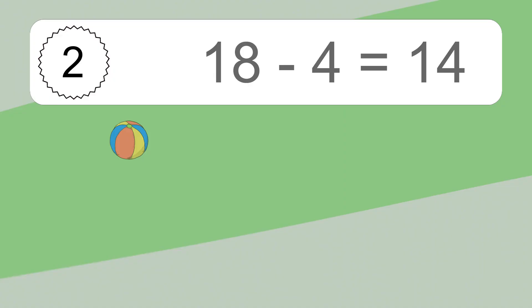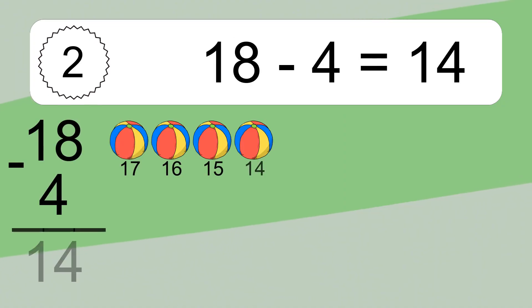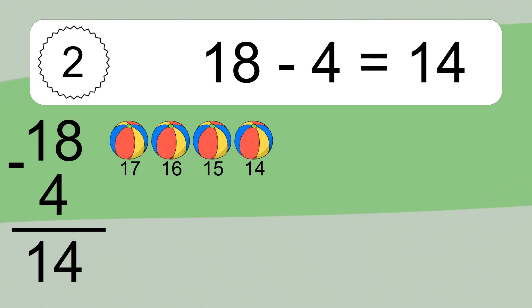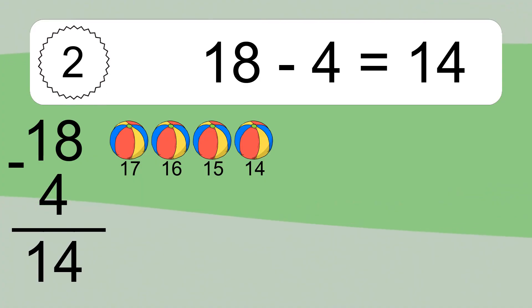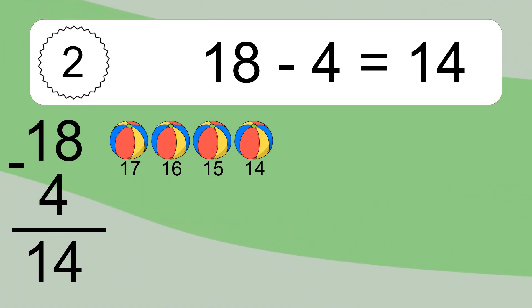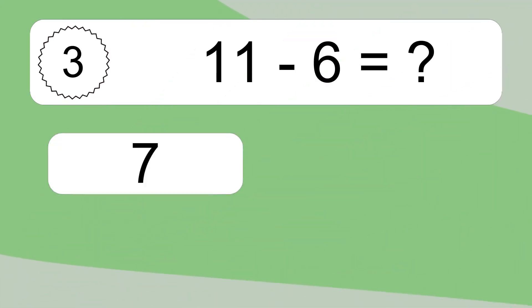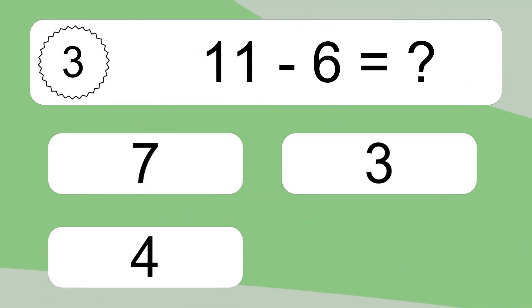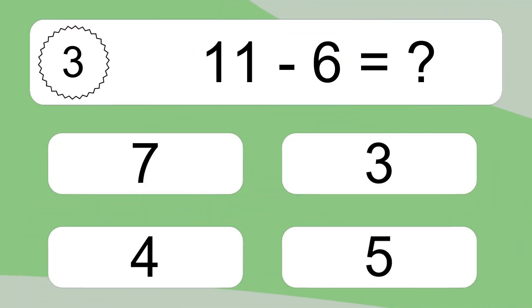18 minus 4 equals what? 18 minus 4 equals 14. Let's count it: 17, 16, 15, 14.